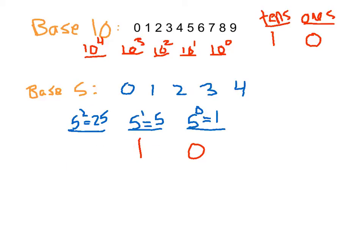The first several numbers in base 5 are: 0, 1, 2, 3, 4. To get to five, we write one five and zero ones. To get to six, we have one five and one one. To get to seven, we have one five and two ones. It sounds strange, but the columns represent powers of five.